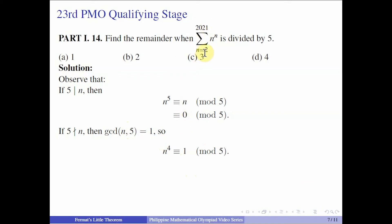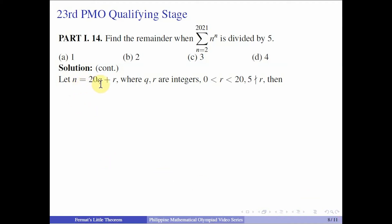We are dealing with several numbers here, from 2 to 2021. What we know is that we can reduce the exponent modulo 4, and we can also reduce the base modulo 5. 4 times 5 is 20. Maybe we can look at trying to reduce both the exponent and the base by 20. Let us write n = 20q + r, where q and r are integers, and r is like the remainder when you divide n by 20. But we are already going to exclude all the possible remainders that are divisible by 5, namely 0, 5, 10, and 15, because we already know that if the number is divisible by 5, then its remainder when divided by 5 is 0.